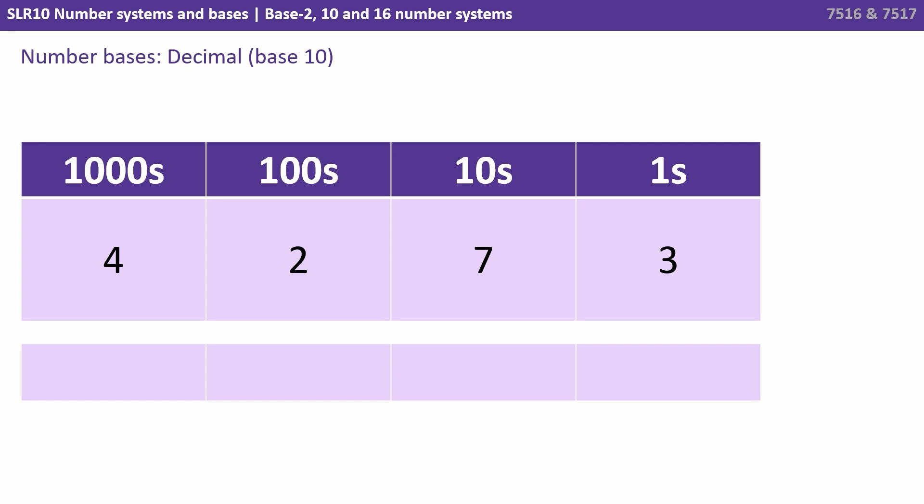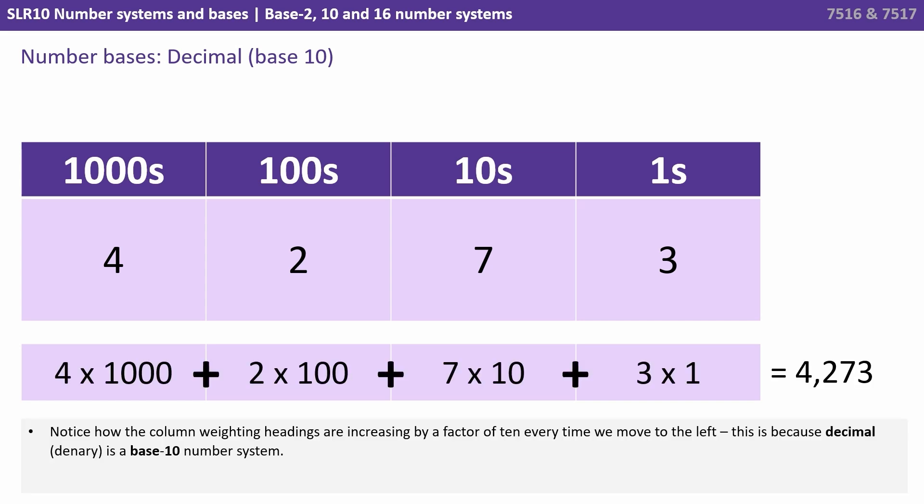We can write a more complicated number out, 4273. We understand that that's 4 lots of 1000 plus 2 lots of 100 plus 7 lots of 10 plus 3 lots of 1. 4273.